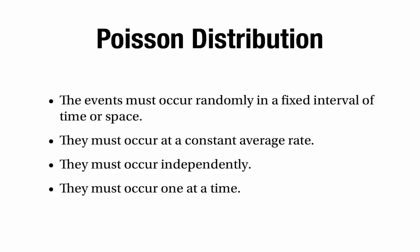The final criterion says things must occur one at a time. That's probably the case, because if two fires were triggered near each other they'd likely merge into one and be counted as one big fire. It's clear that not all criteria are satisfied, so it's doubtful whether the number of fires has an exact Poisson distribution. But hopefully the distribution is sufficiently similar to Poisson for the hypothesis test to be valid — and remember, the probability we calculated was significantly less than 5%.